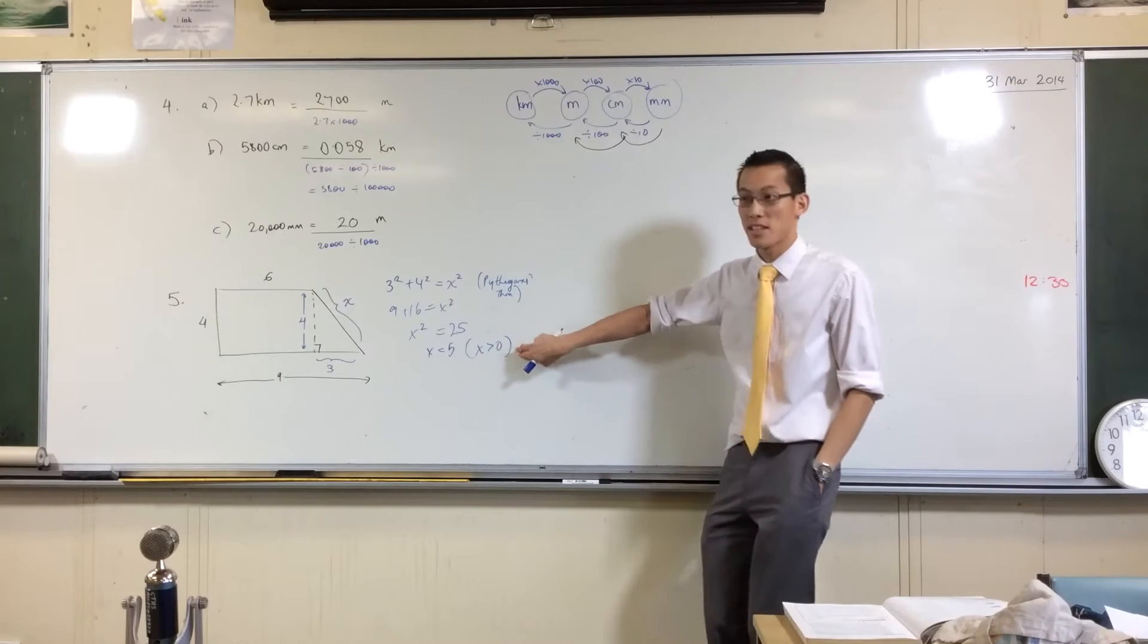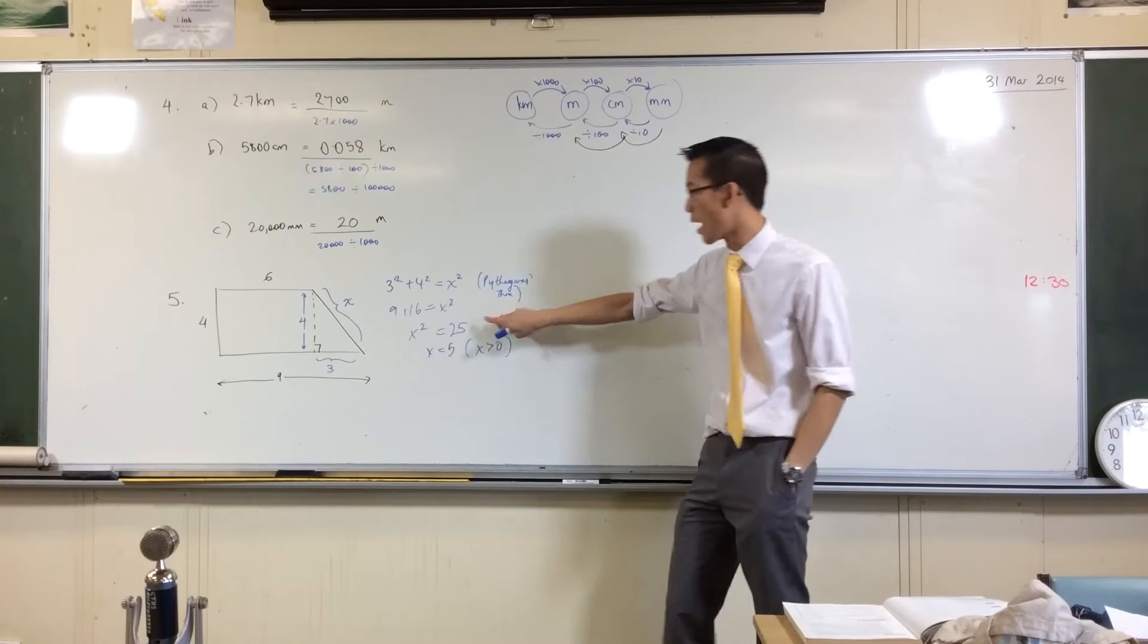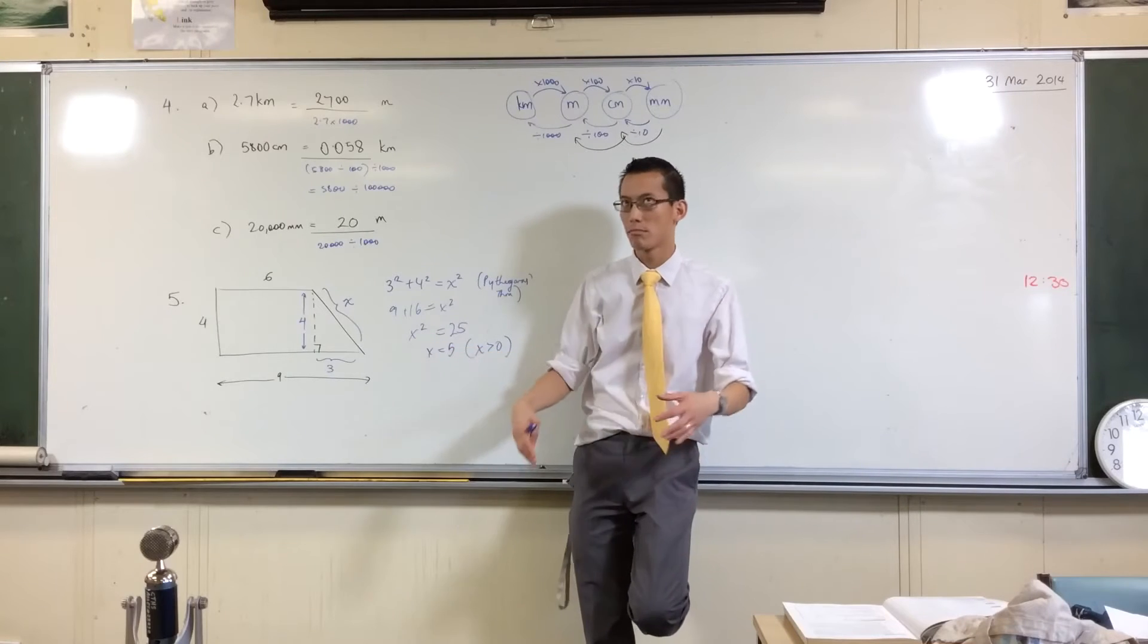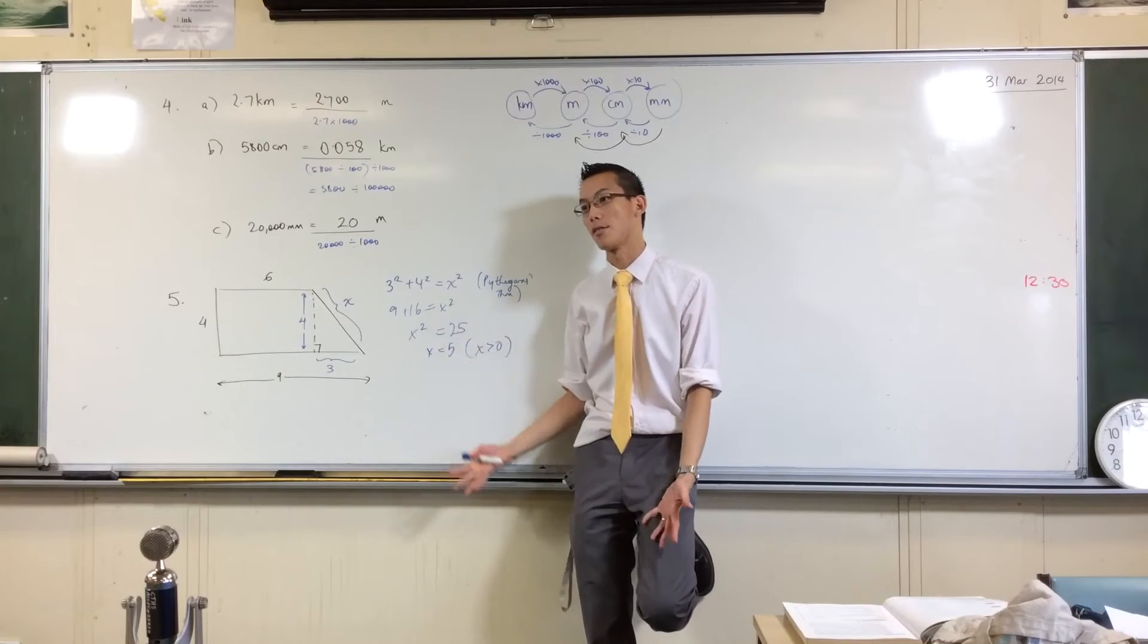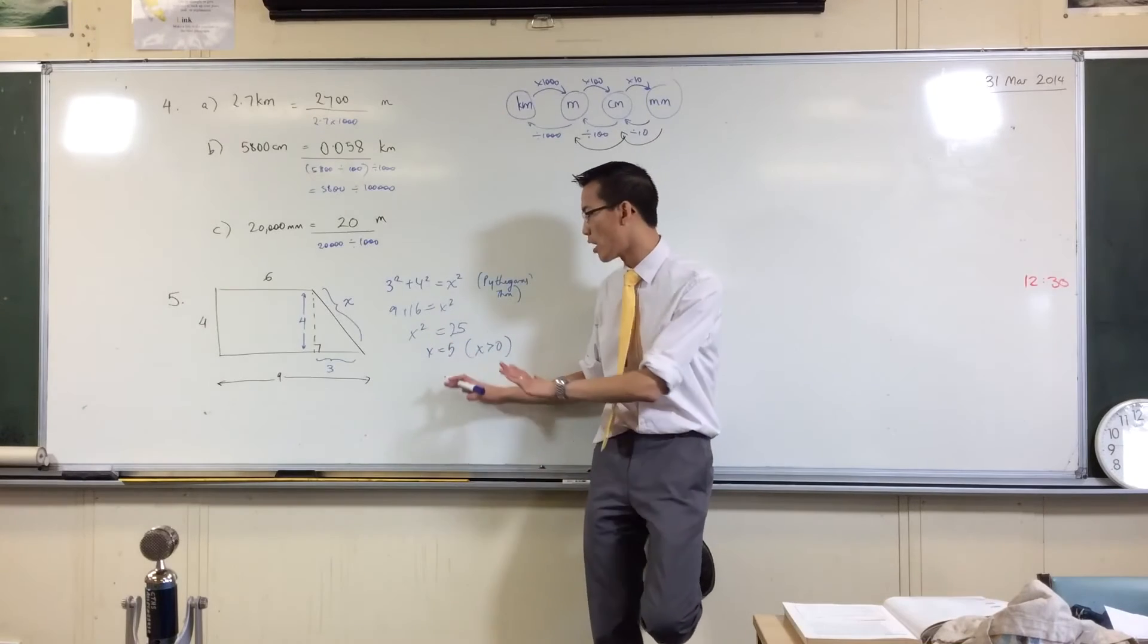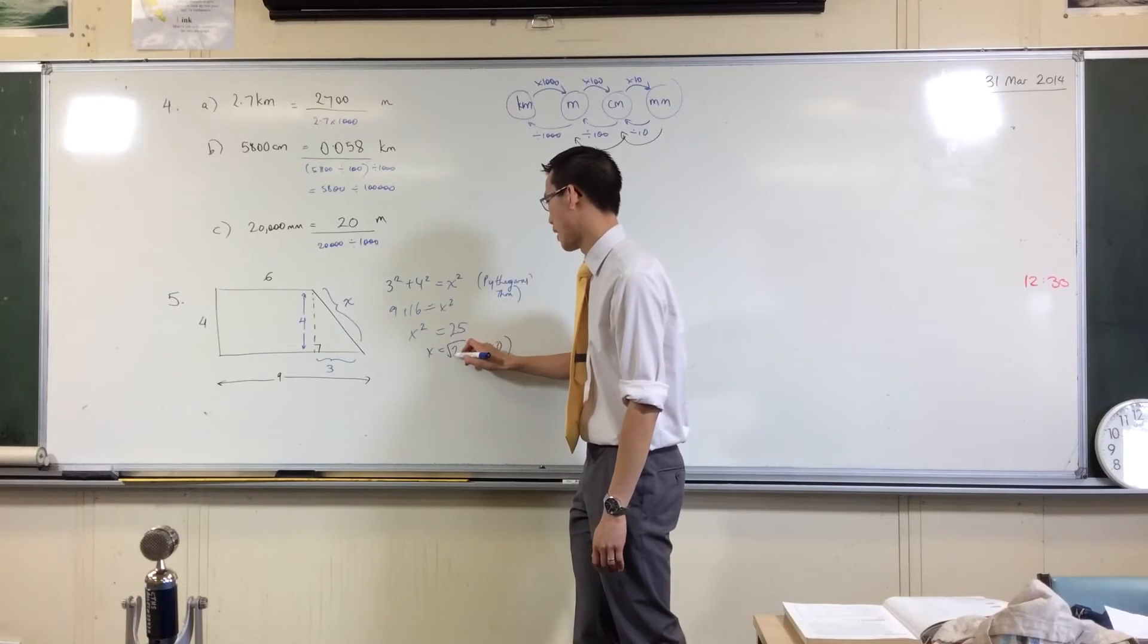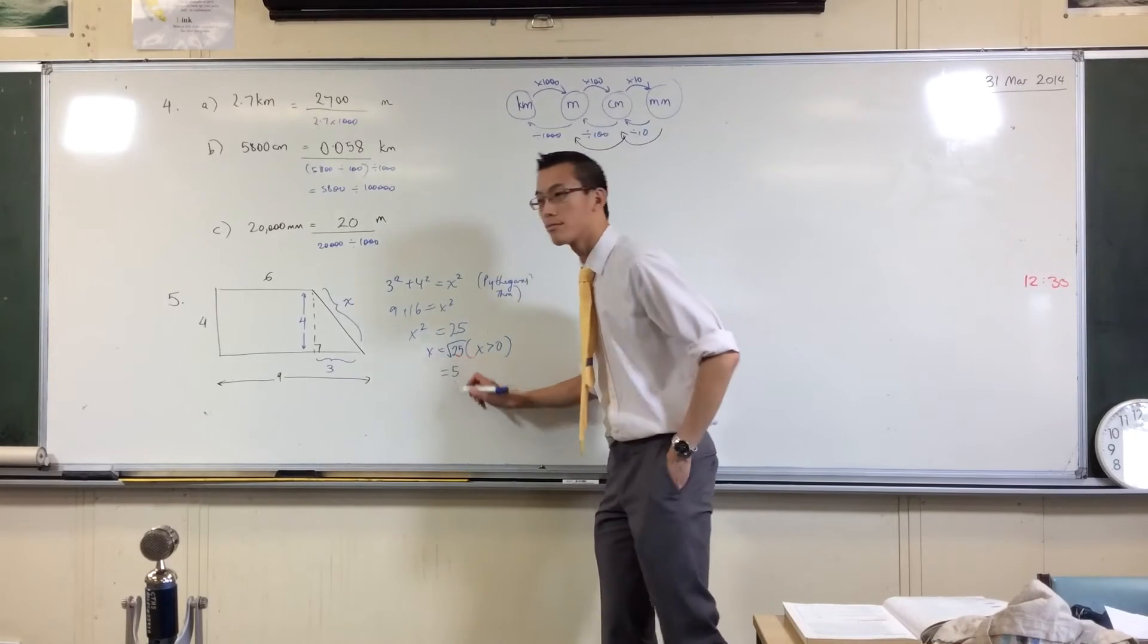Are you asking about this or this? You had 25 and went straight to five. Yeah, so I'm thinking what's the number that when I square it will give me 25? The answer is five. Alternatively, you go to your calculator and put in the square root button. That'll also give you five.